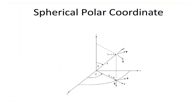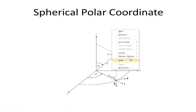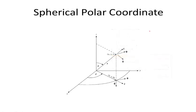Now let us consider the spherical polar coordinate system. If you have a point in spherical polar coordinate system, it will be specified by three coordinates r, theta, and phi. Consider this point P. This point P is described in Cartesian coordinate system by x, y, z coordinates, and in spherical polar coordinate system by r, theta, and phi. The angle theta is the polar angle and angle phi is the azimuthal angle.